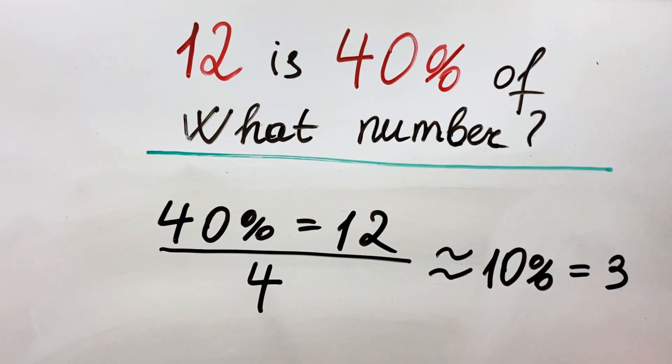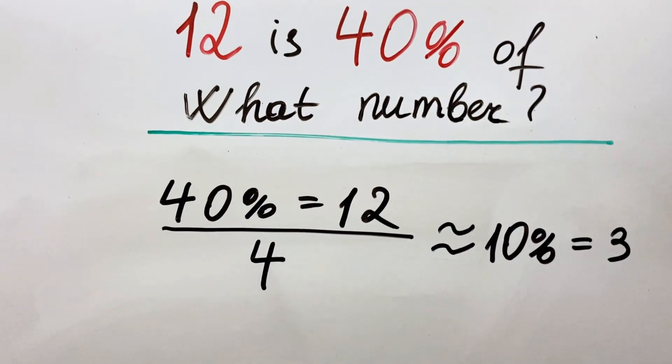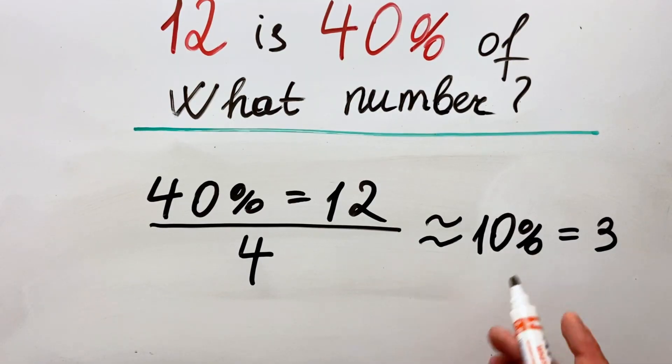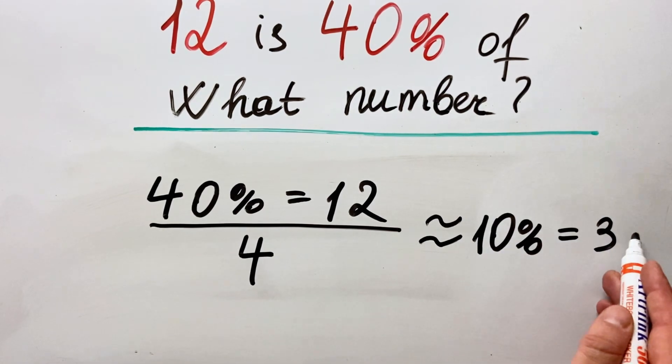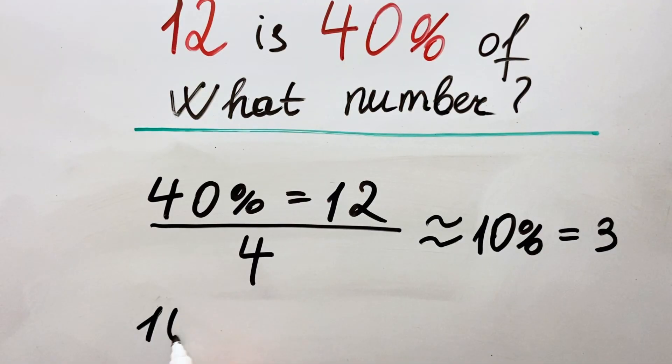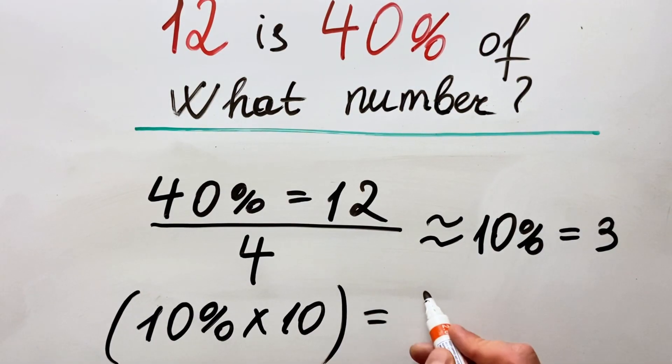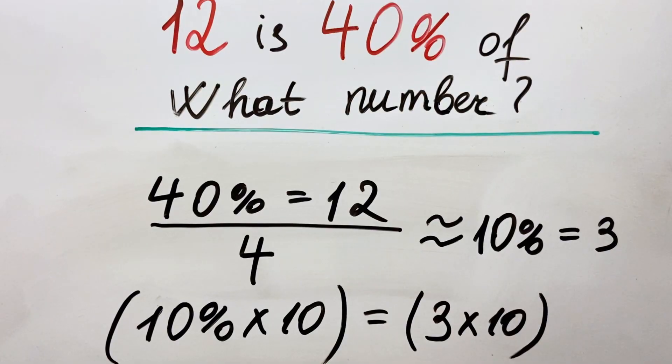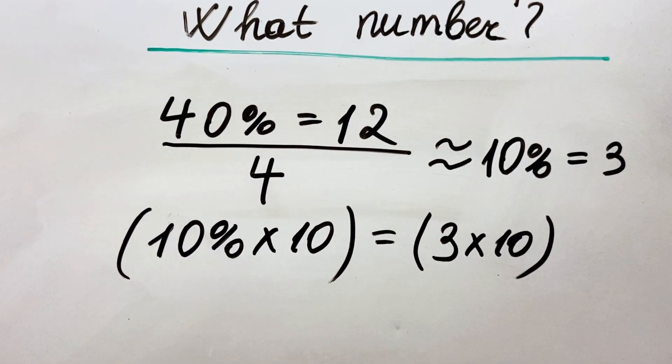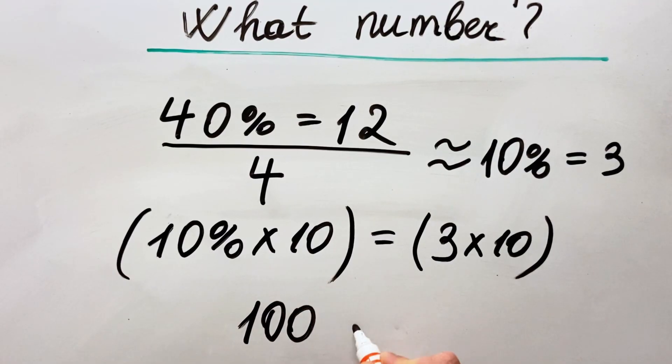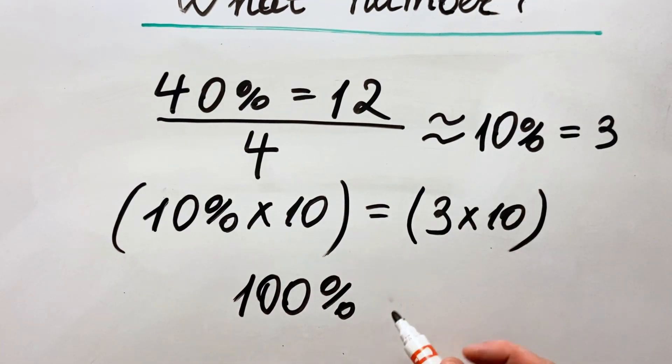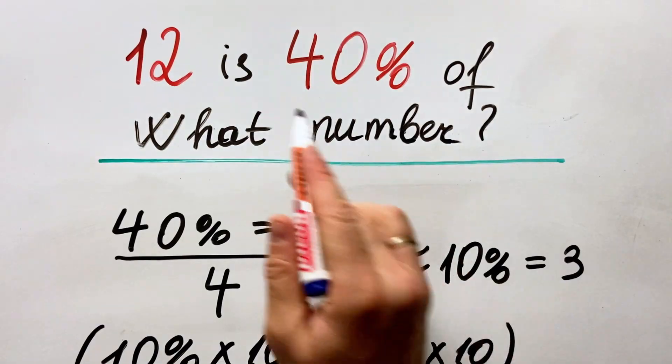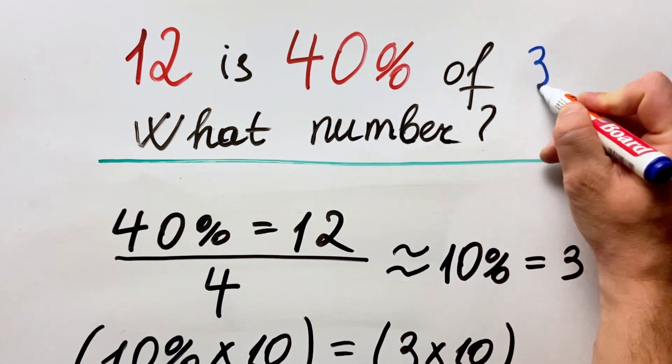To find out the 100 percent we need to multiply both sides by 10 because here we'll have 100 percent. So what we get: we have 10 percent, we multiply by 10 and equals to 3 multiply by 10, and in the end we have 100 percent is 30. So the answer is 12 is 40 percent of 30.